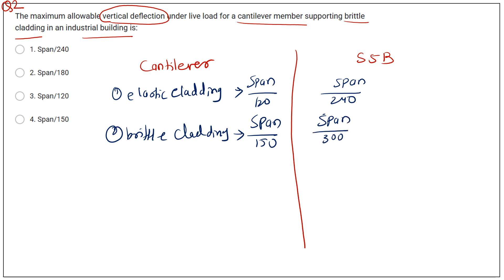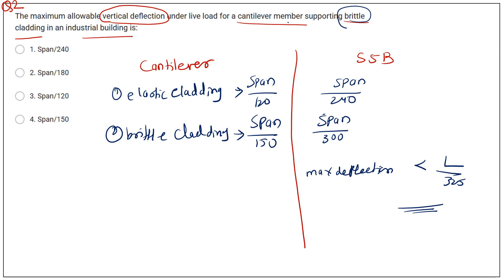In the case of simply supported beam, there is one additional condition: maximum deflection must be less than L/325, where L is the span. This is the general condition for vertical deflection in simply supported beams. As per the question, they ask about brittle cladding in a cantilever beam, so vertical deflection is span/150. The last option is correct.